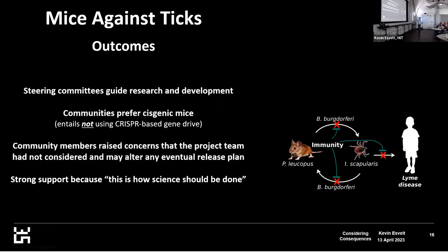What was the result? They set up steering committees to guide the research and development — sampling the population, talking to people, figuring out what they think, and conveying that to us. We would give the steering committees regular updates. They definitely preferred killing all the ticks, which isn't something we think we can do yet. But they wanted us to stick with genes from the white-footed mice themselves — they didn't want us pulling genes from lab mice or any other species. This was a divide in the community: about one third didn't care where the genes came from, and that one third pretty much universally had some kind of higher education training in STEM, while those who opposed it almost universally did not. But the majority clearly doesn't want us to use genes from other species, so we're doing something cisgenic.